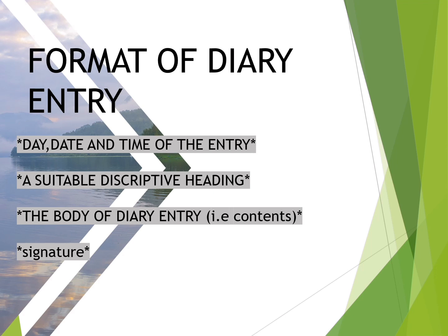The format of a diary entry starts with the day, date, and time. When we write a diary, first we write the day — for example, Thursday — then the date, such as January 1, 2016, with the month name and year. After that, we write the time when we are writing the diary.